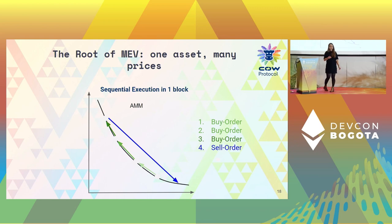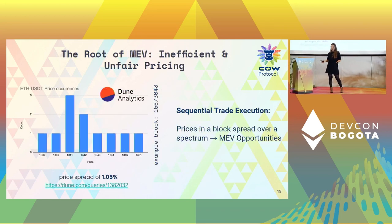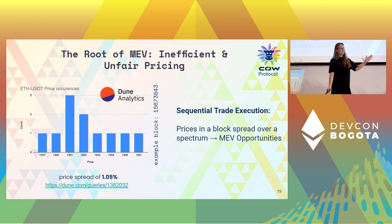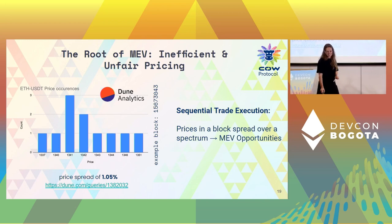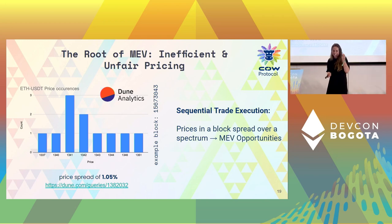This creates incentives for other players to jump in, move transactions around, and place additional transactions in front of and after users to extract value. As a concrete real example from six days ago: in a single block, eleven different traders all traded ETH/USDT — one of the most liquid pairs on Ethereum — yet within that single block there were eight different clearing prices, with a price spread from $1,337 to $1,351 USDT, more than a 1% spread within a single block.